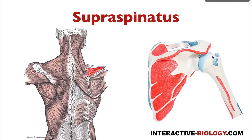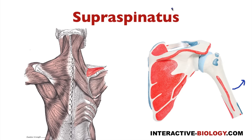Now what's going to happen when this muscle contracts? It comes from the supraspinus fossa to right here at the upper facet of the greater tubercle. When that contracts, what's that going to do to the humerus? Well, that's going to cause abduction. So it's going to actually initiate the process of abduction when the supraspinatus muscle contracts, just based on where it originates and where it attaches. It's not a huge muscle, so it doesn't do all of the abduction, but it does initiate that process.